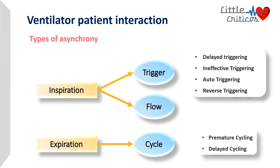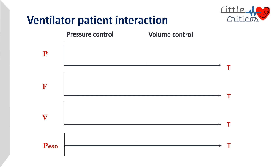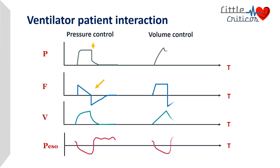Cycle asynchrony can be premature cycling or delayed cycling. So broadly, there are seven types of asynchrony that one needs to recognize at the bedside. Before moving on, let us quickly revise the types of breaths. In a pressure-controlled breath, there is variable flow and constant pressure. In a volume-controlled breath, flow is kept constant and pressure varies. We will now try to understand asynchronies in each type of breath.